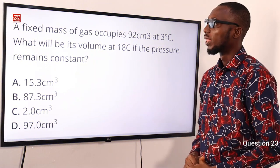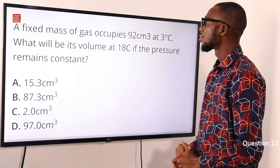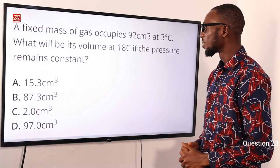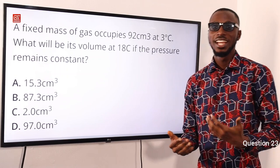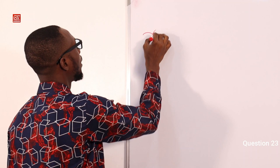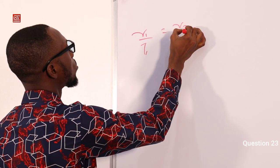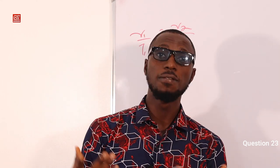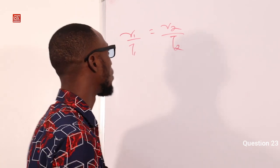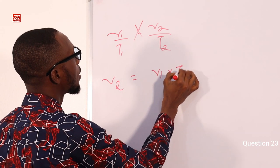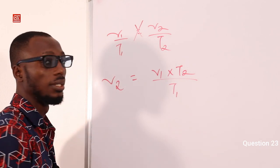Question 23: A fixed mass of gas occupies 92 cm³ at 3°C. What will be its volume at 18°C if the pressure remains constant? This question applies Charles' Law: V1/T1 = V2/T2. We need to find V2. So V2 = V1 × T2 / T1. From the question, V1 = 92 cm³, T1 = 3 + 273 = 276 K.